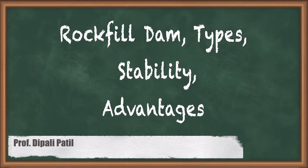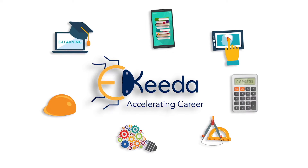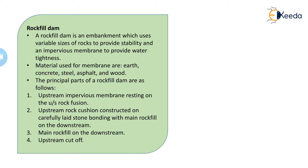In this video, we are going to study about the Rock Fill Dam. It is one type of dam. Basically, this Rock Fill Dam is an embankment which uses various sizes of rock to provide stability and an impervious membrane to provide water tightness. Sometimes this Rock Fill Dam can be made up partially of a rigid part, or sometimes up to 50% of it will be made up of earthen material.